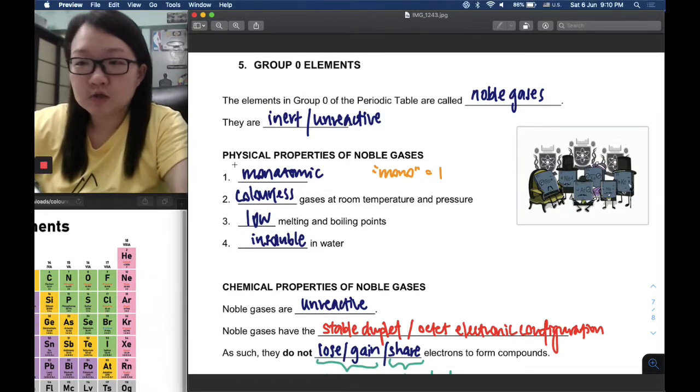In terms of physical properties, noble gases are monoatomic, mono meaning one. Because they are unreactive and have a stable electronic configuration, noble gases are happy to be in atomic states. They do not lose, gain, or share any electrons to form compounds, so they remain as atoms.